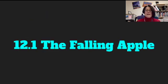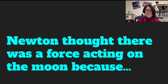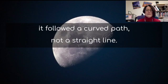Let's take a look at the falling apple from Section 12.1 in your book. Newton thought there was a force acting on the moon because it followed a curved path, not a straight line. We know from Newton's laws that if an object is moving because of inertia, it continues moving in a straight line until acted upon by an outside force.